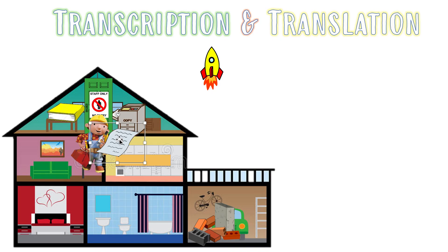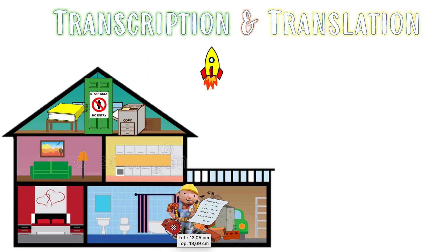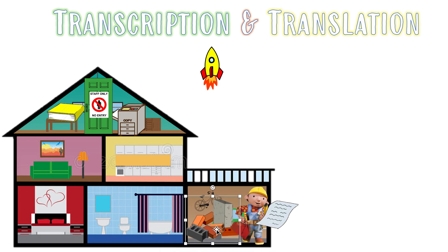Now Bob the Builder has the instruction manual on how to build this rocket, with all his tools. But what else does he need? One more thing — he needs materials. So he heads to the garage, because the garage has all of the raw materials to help him build this rocket. Now he's got the three things he needs: himself with all the tools, the instruction manual, and his raw materials.